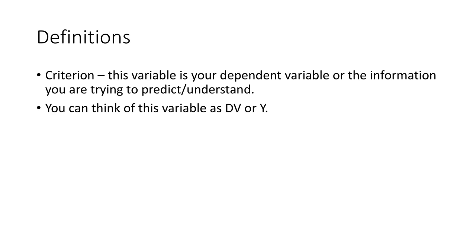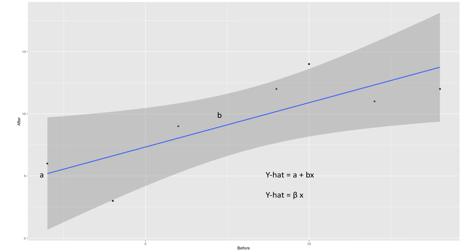Here's an example of a ggplot where we might use before scores to predict after scores. What I'm really focused on is the line in the middle. What we often do is create a regression equation to talk about prediction of scores, or how well our X variables predict Y. There are two ways to write this. The first is Y-hat equals A plus BX. Depending on your math background, you might have seen MX plus B — it's the same idea.